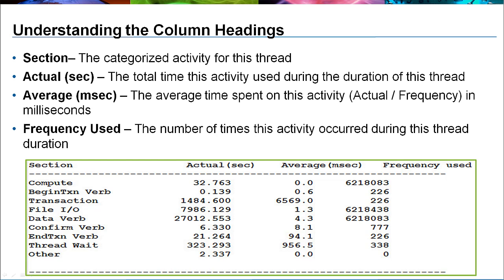Use this chart to understand the meanings of the column values displayed in the thread output. Section is the sub-activity or category; values in each row are subtotals for this thread. Actual is the total time spent in this category in seconds — the more time spent here relative to the total time, the more likely this category is the bottleneck. Average is the average time spent on operations in this category in milliseconds. Frequency is the number of times the actions in this category were performed during the measurement interval. Divide this number into the total bytes transferred to calculate the data block size per category.